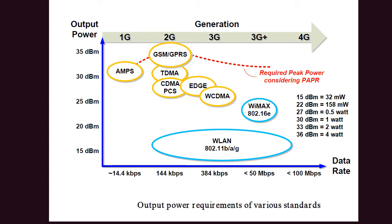For WLAN, because it is an indoor communication system, the output power is lower. The linearity requirement is still there, which will be covered in other videos. This video gives an overview of output power requirements across different generations of wireless standards. When it comes to 5G, the two main differences are the frequency and the very wide bandwidth required to transmit very high data rates.